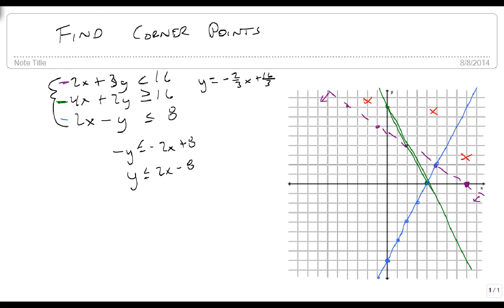0 is not bigger than 16, so this line we need to be on this side, which means he just ruled out him and him for our green line.